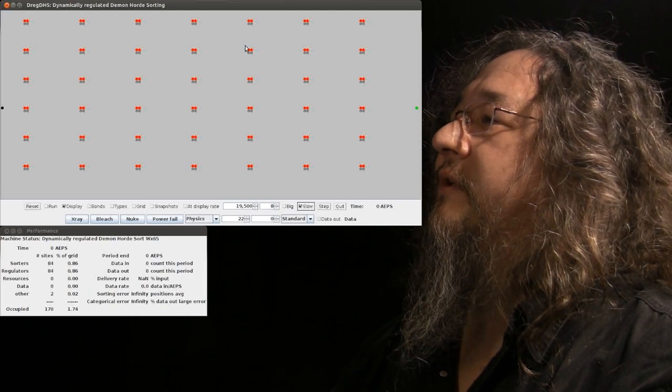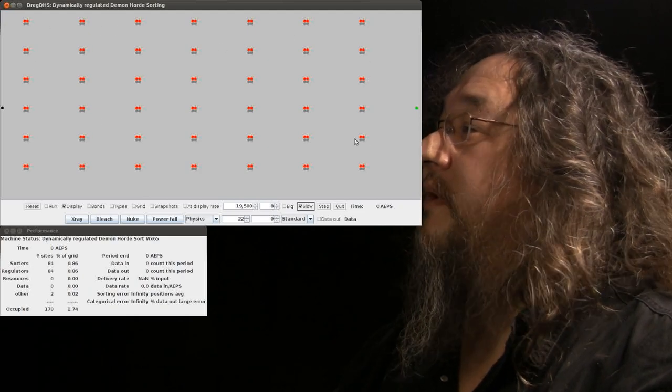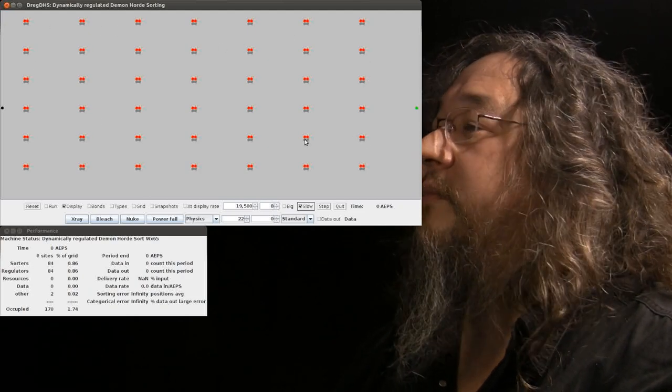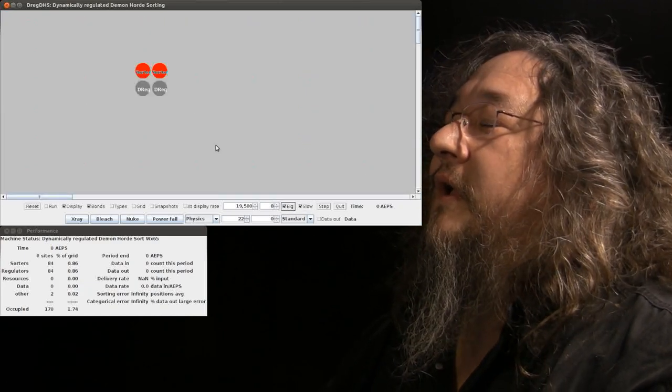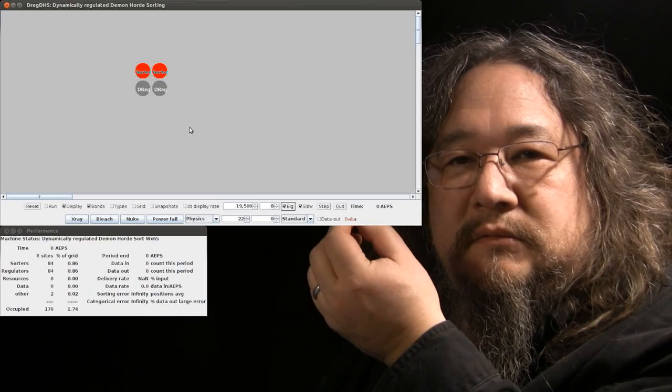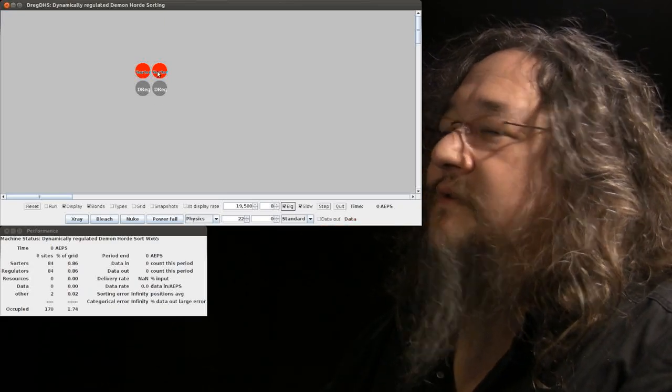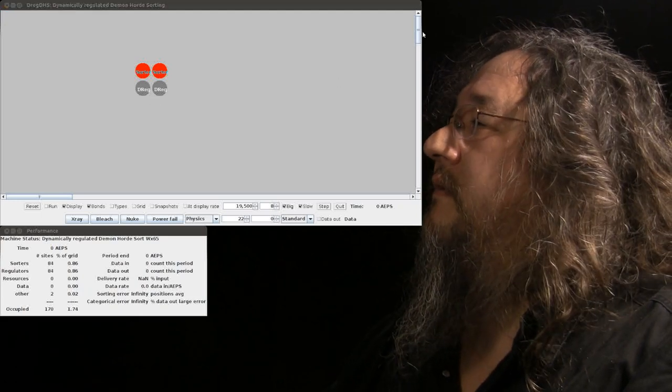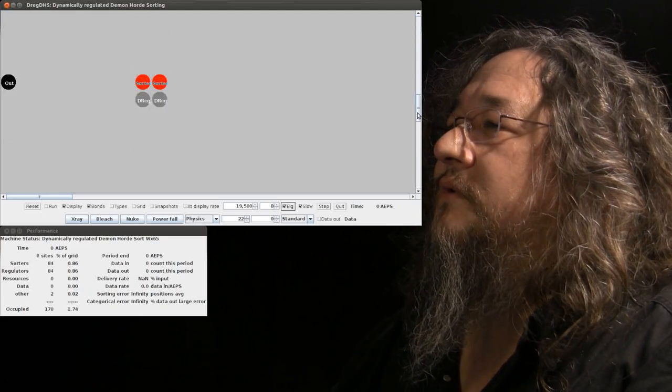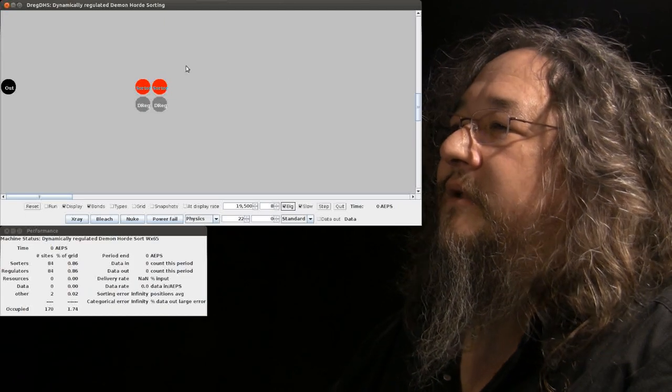So here we've got a much bigger grid than we had last time. It doesn't look bigger because the atoms are all drawn smaller. And so on the field there are these little eggs at regular intervals. Each consists of two sorters and two DREGs. And if we look on down, there's more, and there's more here in the middle, another egg.